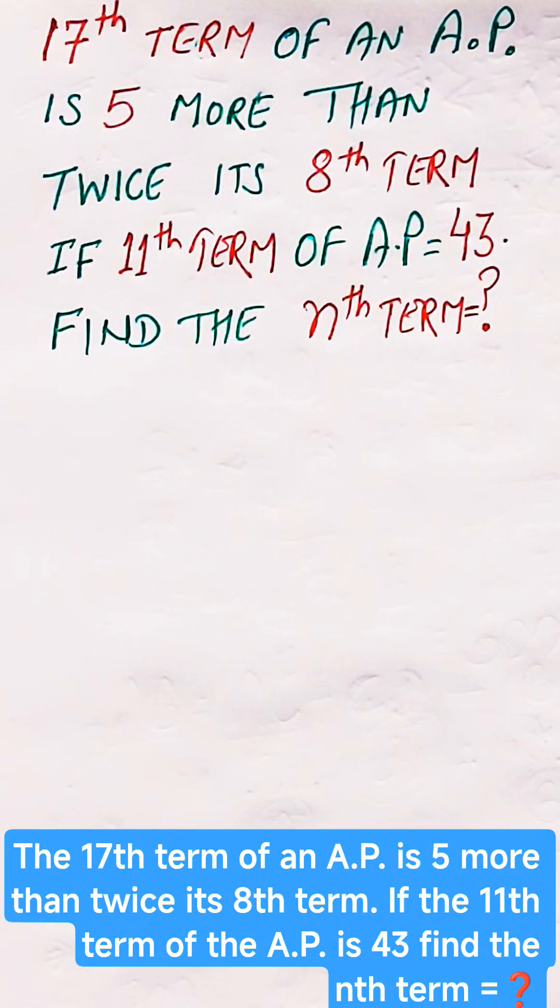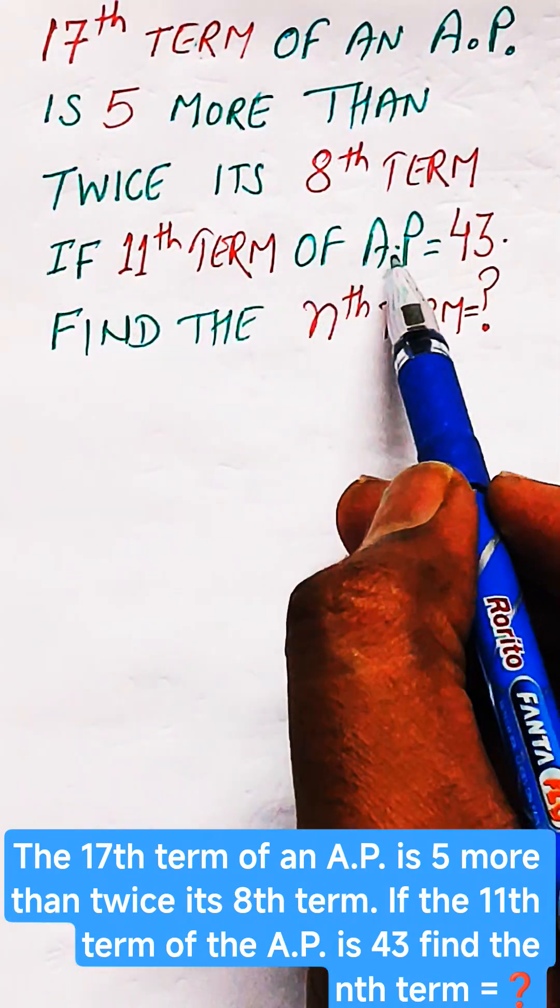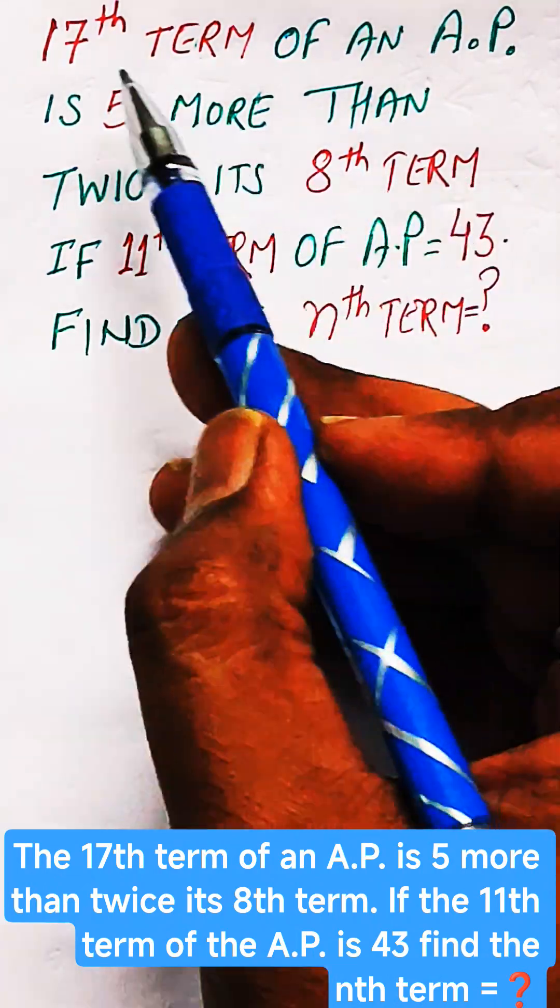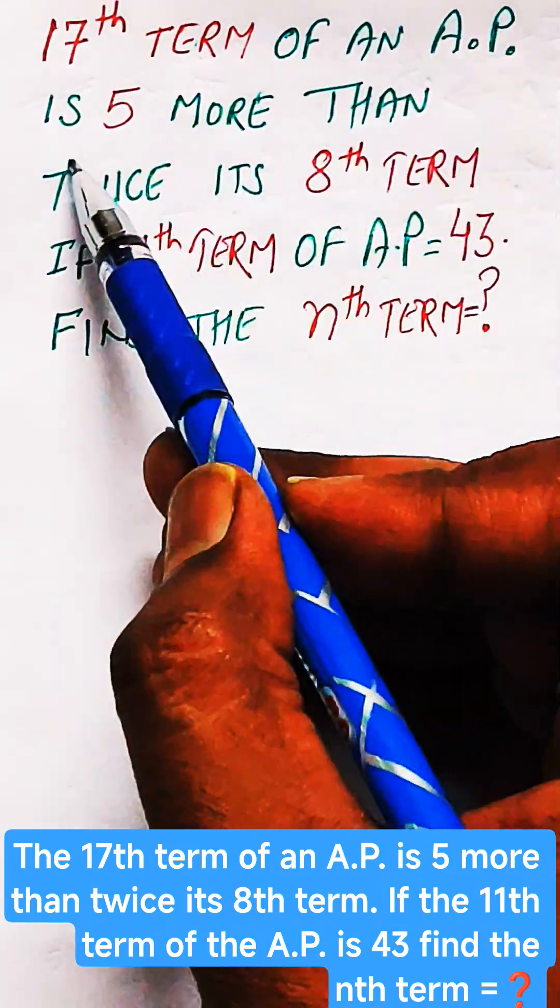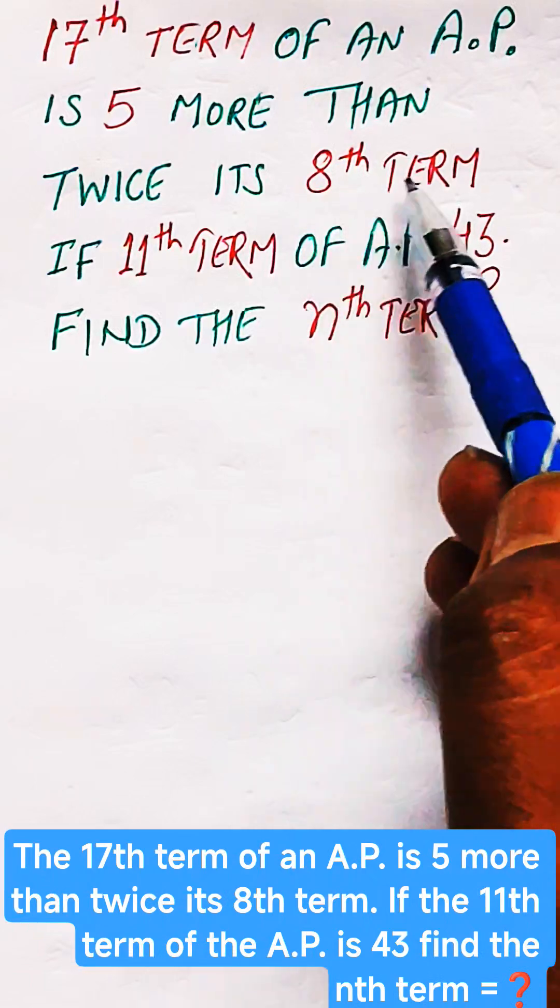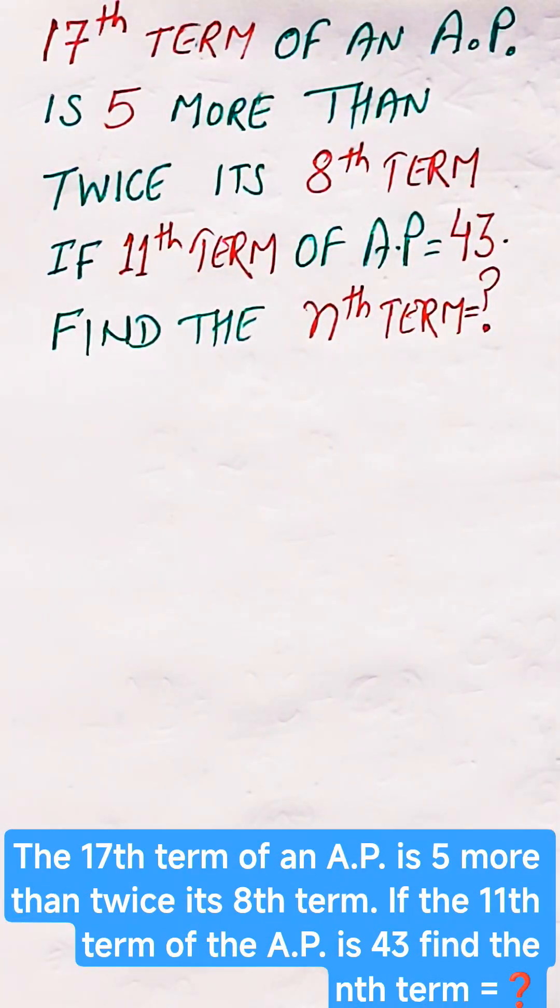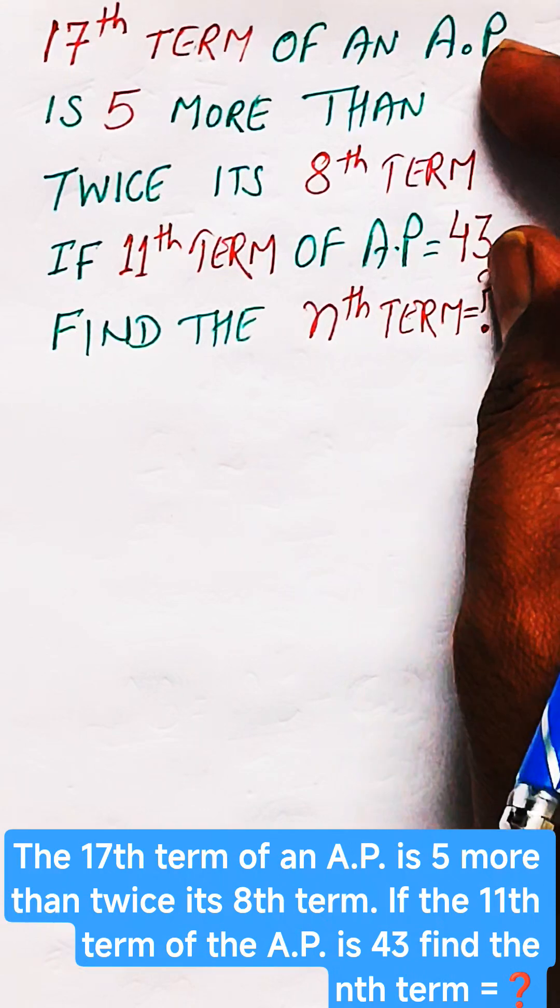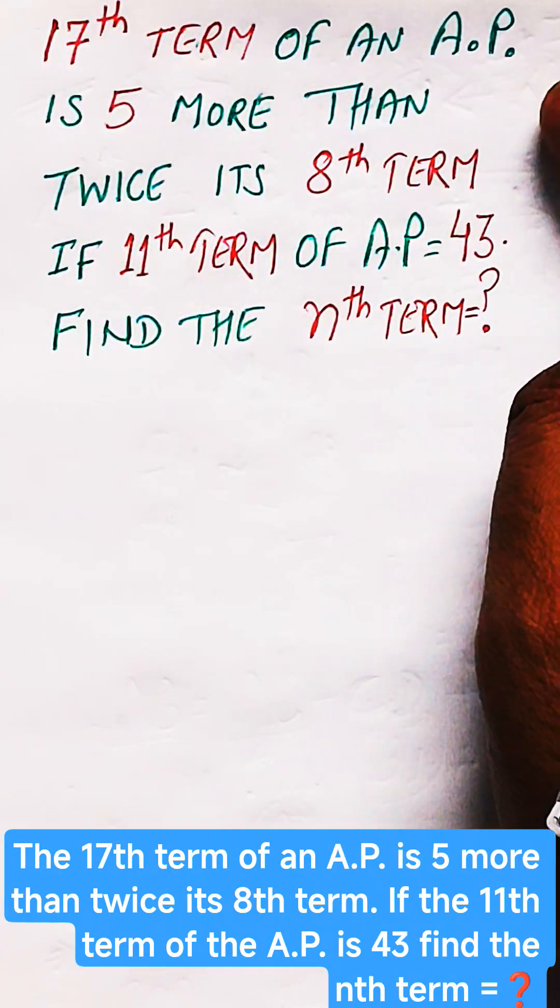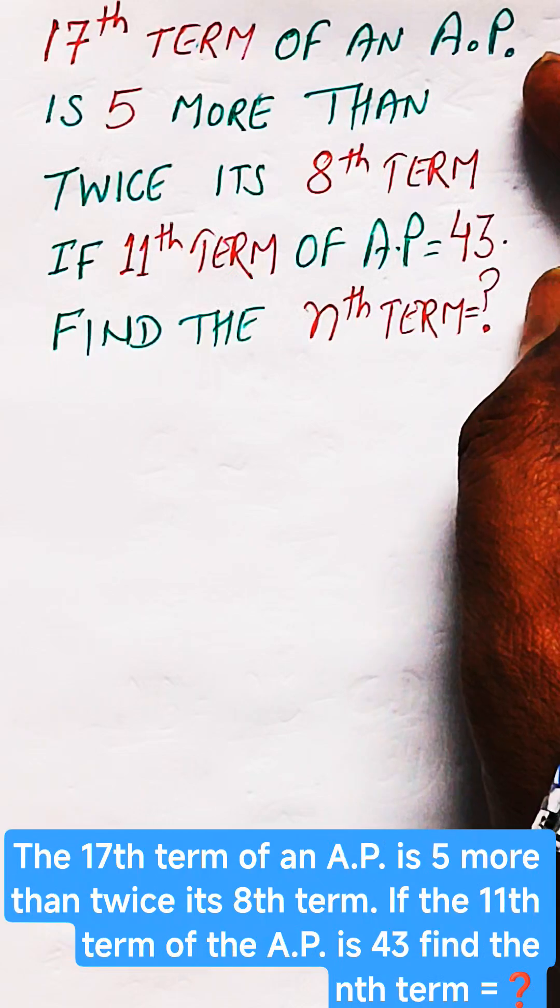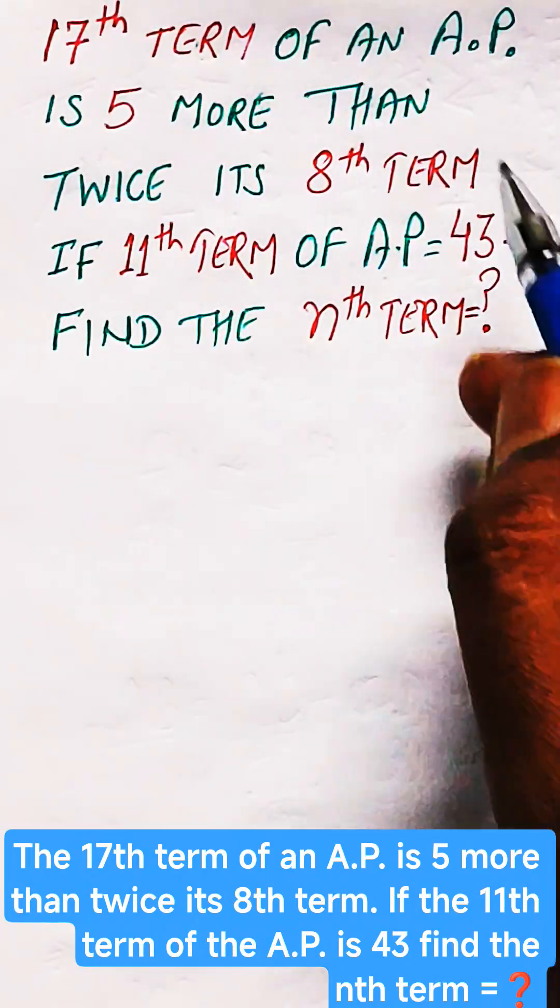The first relation given is that the 11th term of AP is 43. And the second relation is that the 17th term of that AP is 5 more than twice its 8th term. So let us write both relations so that we can find the first term or the common difference according to the given relations.